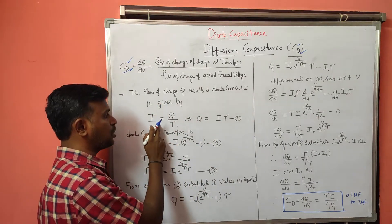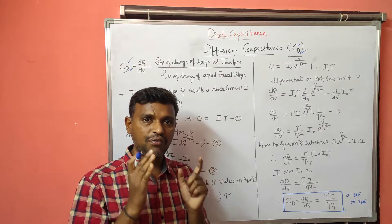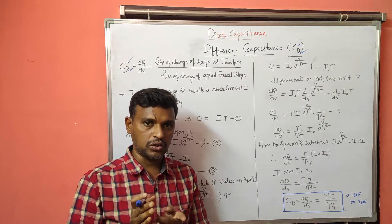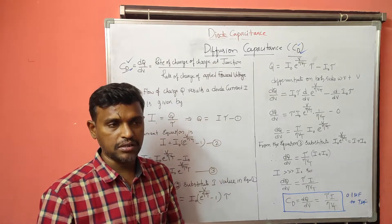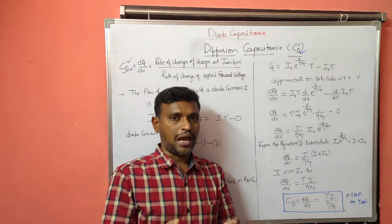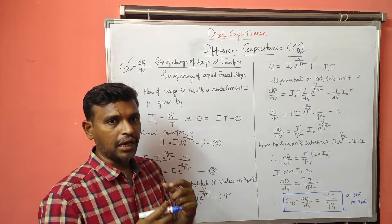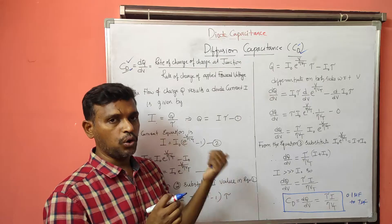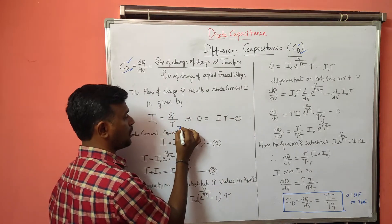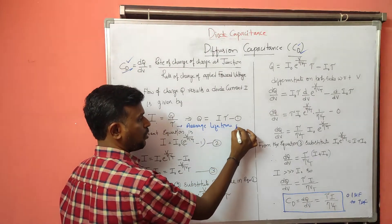The diode current I is taken as I = Q/τ, where τ is the average lifetime of carriers — holes and electrons. We consider the average value of the lifetime of carriers because at a point nearer to the junction, due to recombinations, some carriers will be lost. That is why we consider the average lifetime of the charge carriers. So τ is the average lifetime of carriers, giving us Q = I·τ. This is equation number 1.